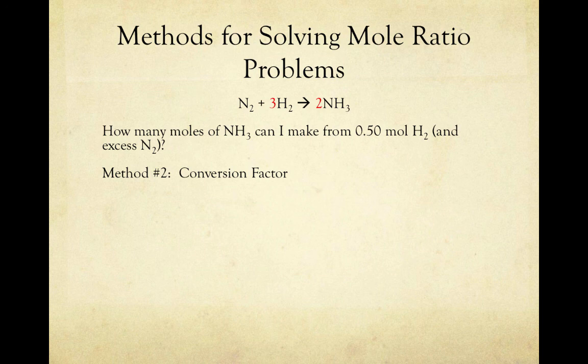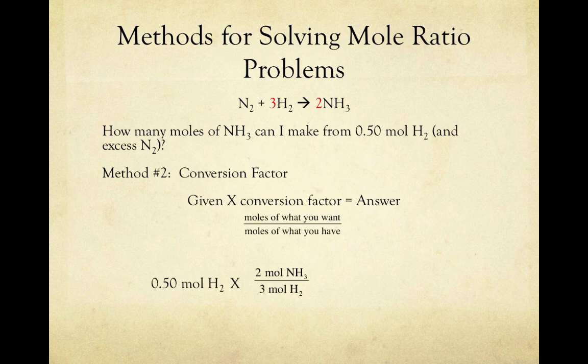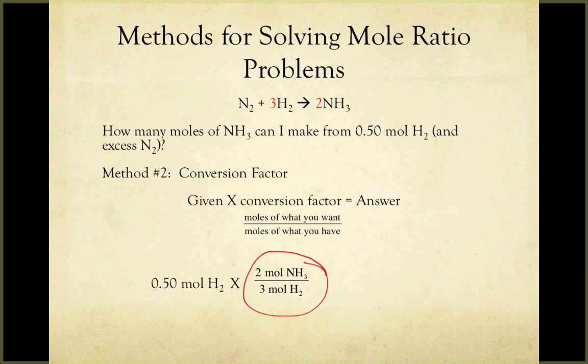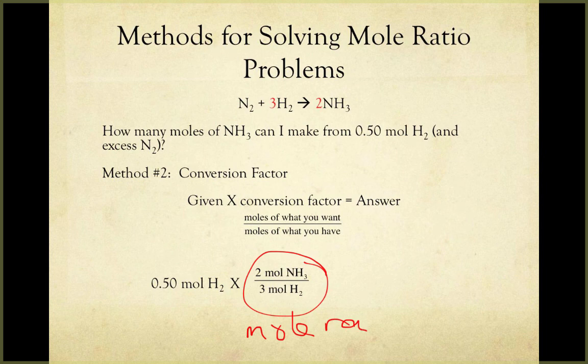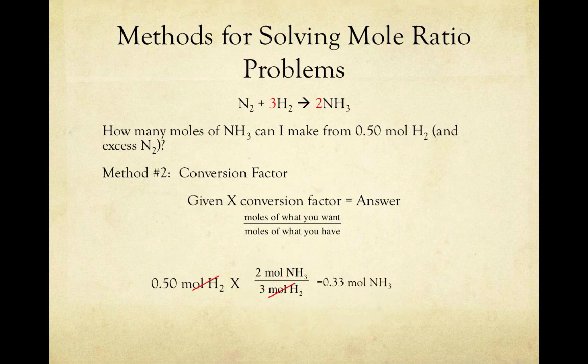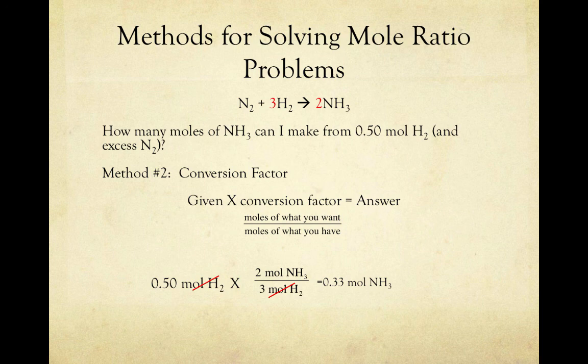Taking the same problem again, we can also solve it using a conversion factor. Here we write the given and multiply by a conversion factor to get our answer. In the problem, we're given 0.5 moles of H2, and we want to multiply by our conversion factor, which in this case is again the mole ratio. Our mole ratio is 2 moles of NH3 to 3 moles of H2. Notice I've put moles of what I want on top, NH3, and moles of what I have on the bottom, H2. This will allow our given units to cancel with the moles of what we have. Canceling our units and solving yields the same answer, 0.33 moles of NH3.